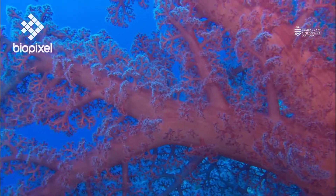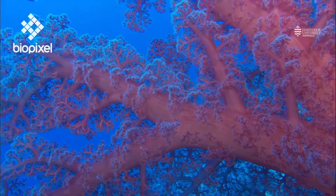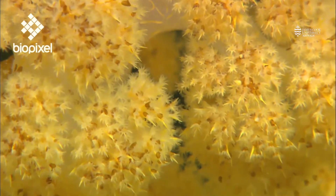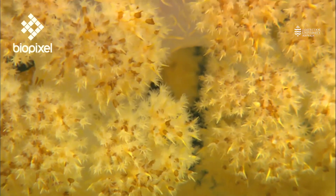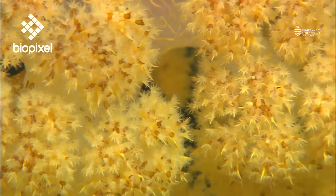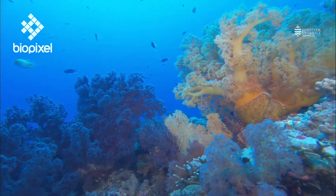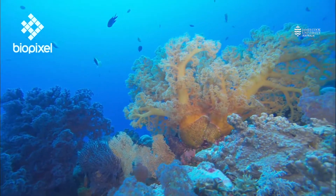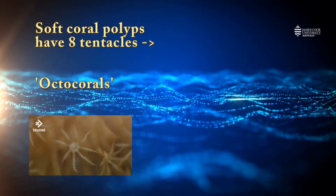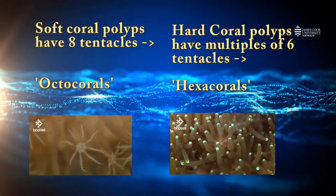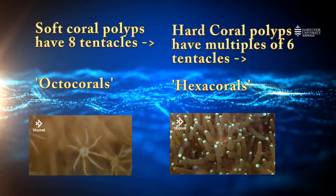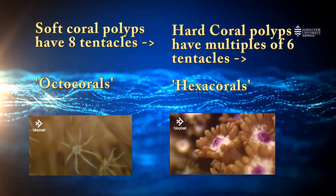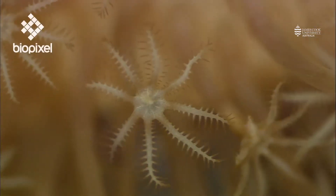Of course, it's not only hard or stony corals that occur on the reef — there are also hundreds of species of soft corals. Soft corals are actually an entirely different group than the hard corals, and they're characterized by always having eight tentacles. Hard corals actually have tentacles that occur in multiples of six.